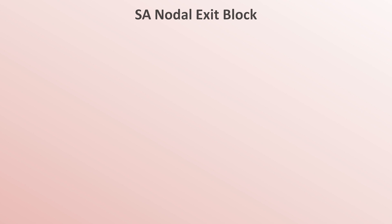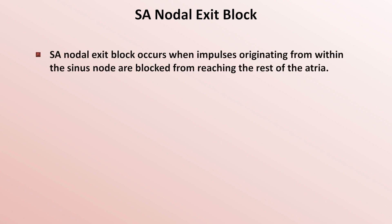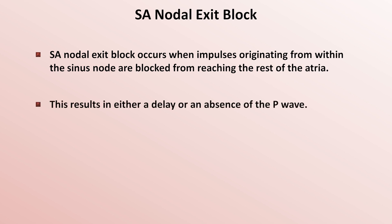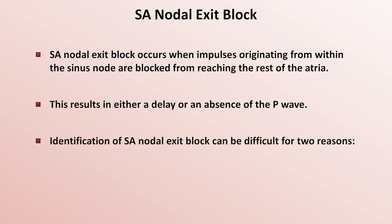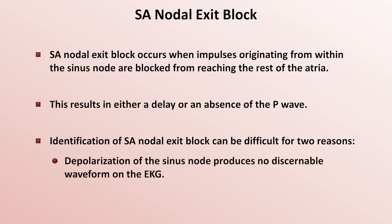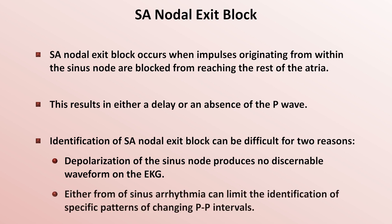The next abnormality is SA nodal exit block, often abbreviated SA exit block or sometimes even SA block. It occurs when impulses originating from within the sinus node are blocked from reaching the rest of the atria, resulting in either a delay or an absence of the p-wave. Identification of SA nodal exit block can be difficult because depolarization of the sinus node itself produces no discernible waveform on the EKG, and concurrent sinus arrhythmia can obscure the characteristic patterns of changing p-p intervals.